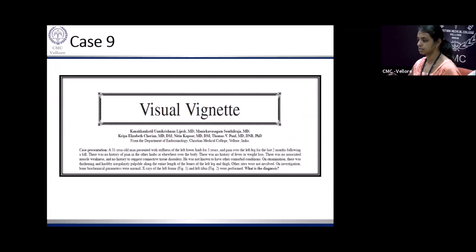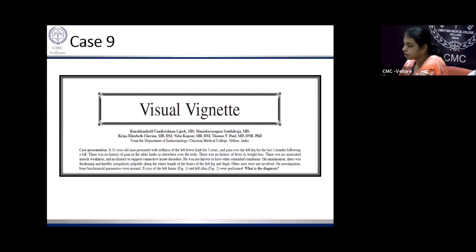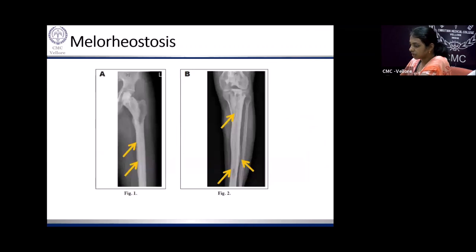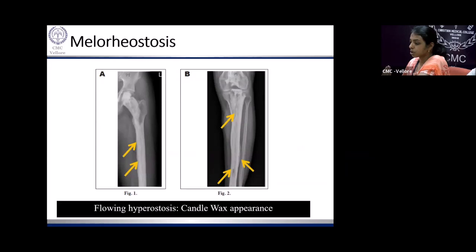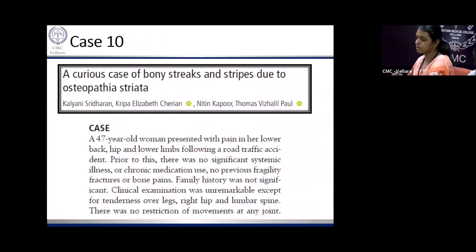A 31-year-old gentleman presented with pain and stiffness of the lower limbs for five years. Bone biochemistry was normal. X-rays of the femur and tibia showed bones that are thick and sclerotic, with the sclerosis flowing along the bone — what we call a flowing hyperostosis with a candle-wax appearance. This is characteristic of melorheostosis.